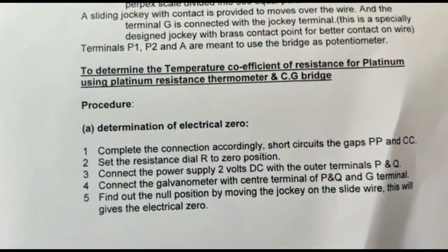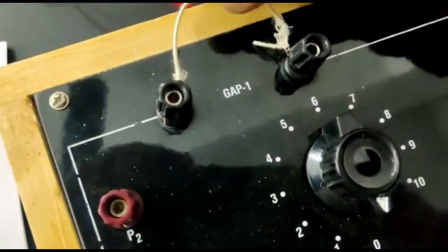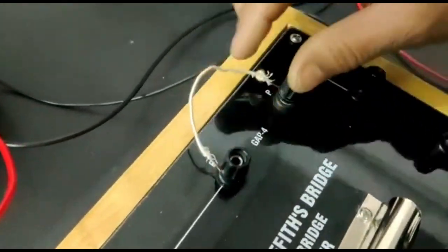Experiment setup for CG Bridge. First, determination of electrical zero. We will short circuit CC gap 1 and PP gap 4.